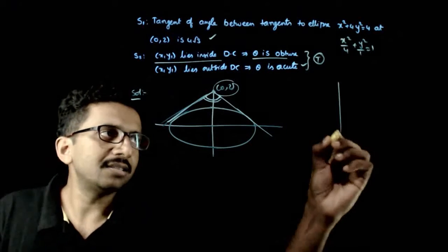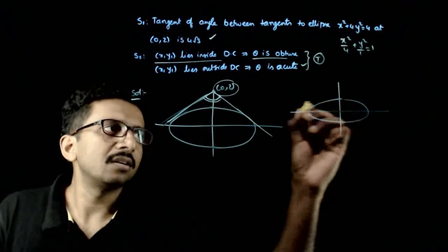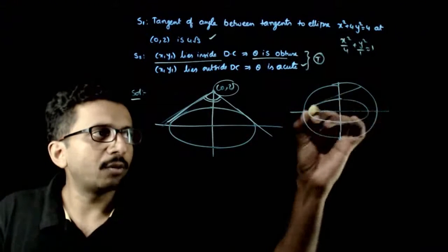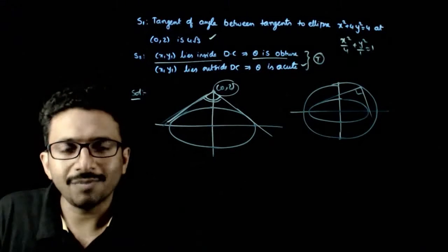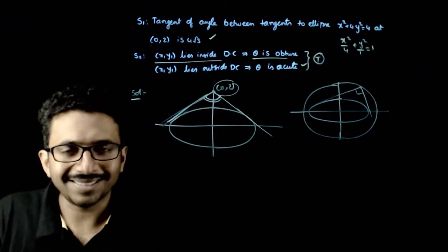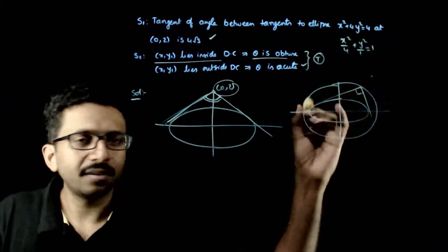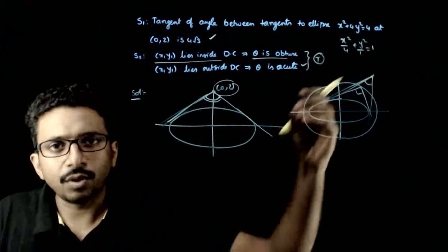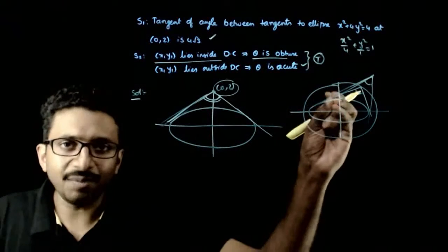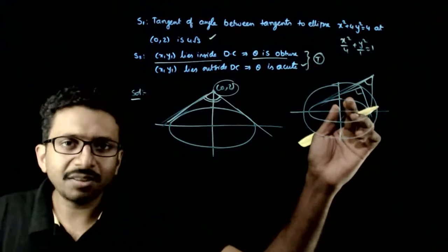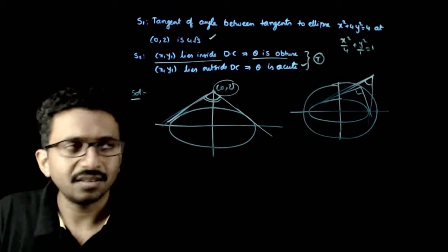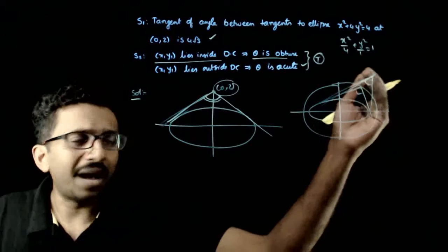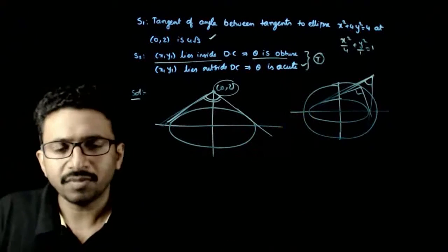The director circle is the locus of points from where you can draw perpendicular tangents. Any point on the director circle will give tangents with an angle of exactly 90 degrees. If you go outside the director circle, the angle between the tangents decreases. If you come inside the director circle, the angle between the tangents increases — so outside gives acute, inside gives obtuse.